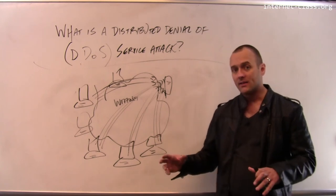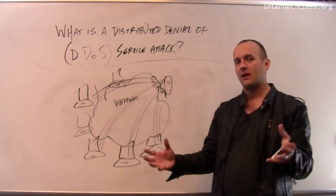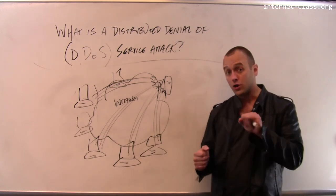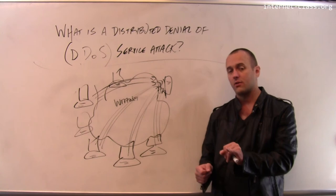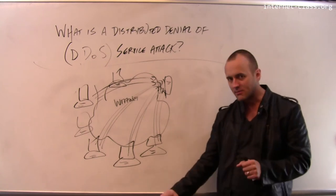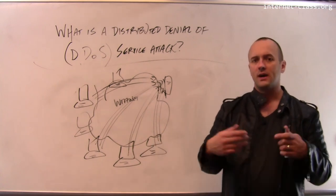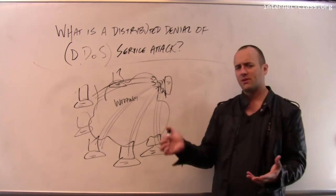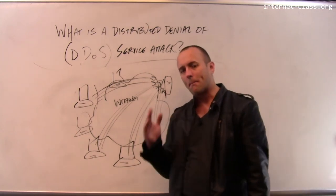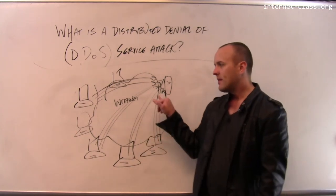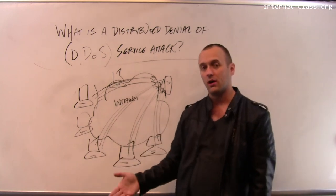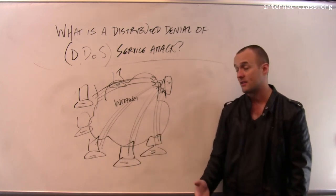A botnet is a bunch of computers on the internet that some hacker has access to — your computer might be one of them. The hacker has broken into your laptop, maybe because you clicked on something you weren't supposed to, or installed software that seemed fun but had Trojans in it. If your computer is part of a botnet, when the attacker tells it to launch an attack, it will follow along.